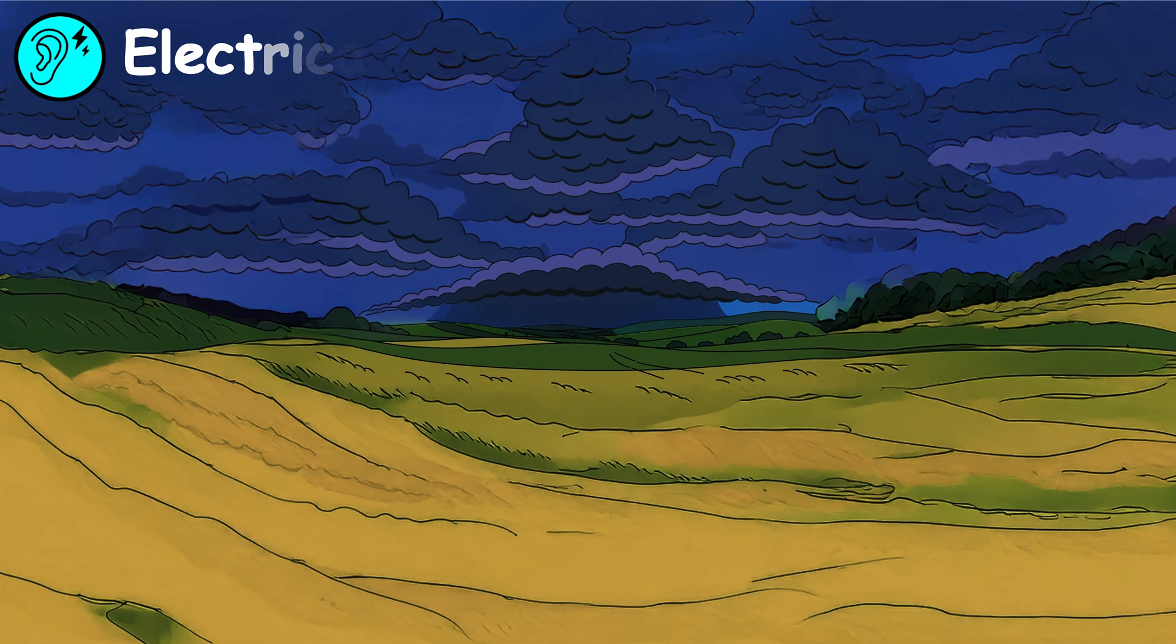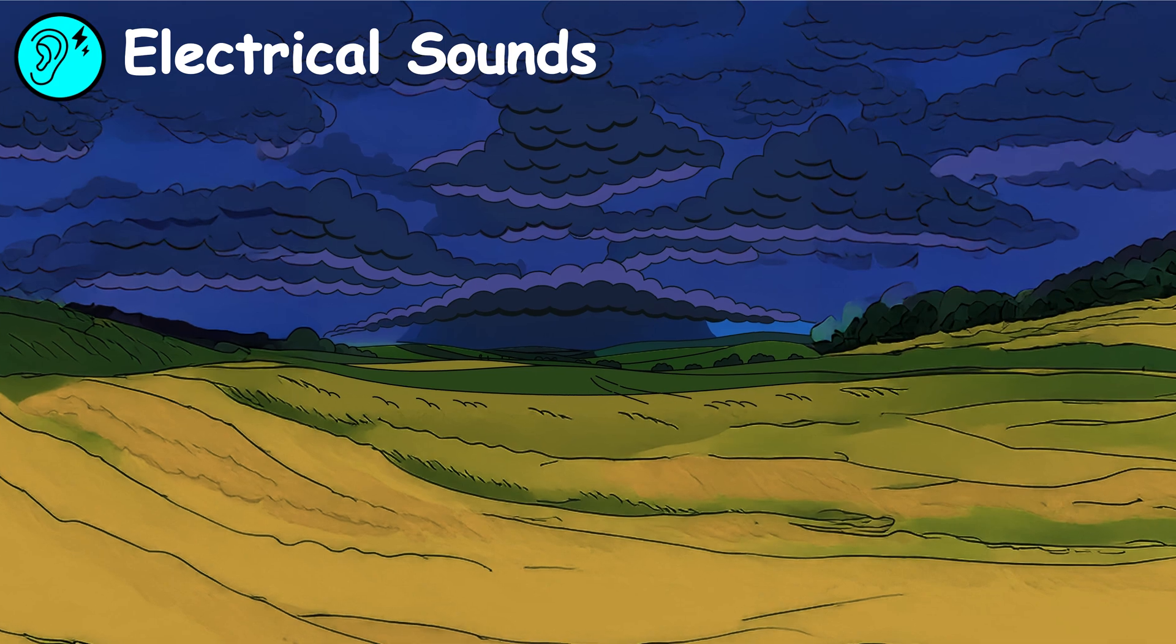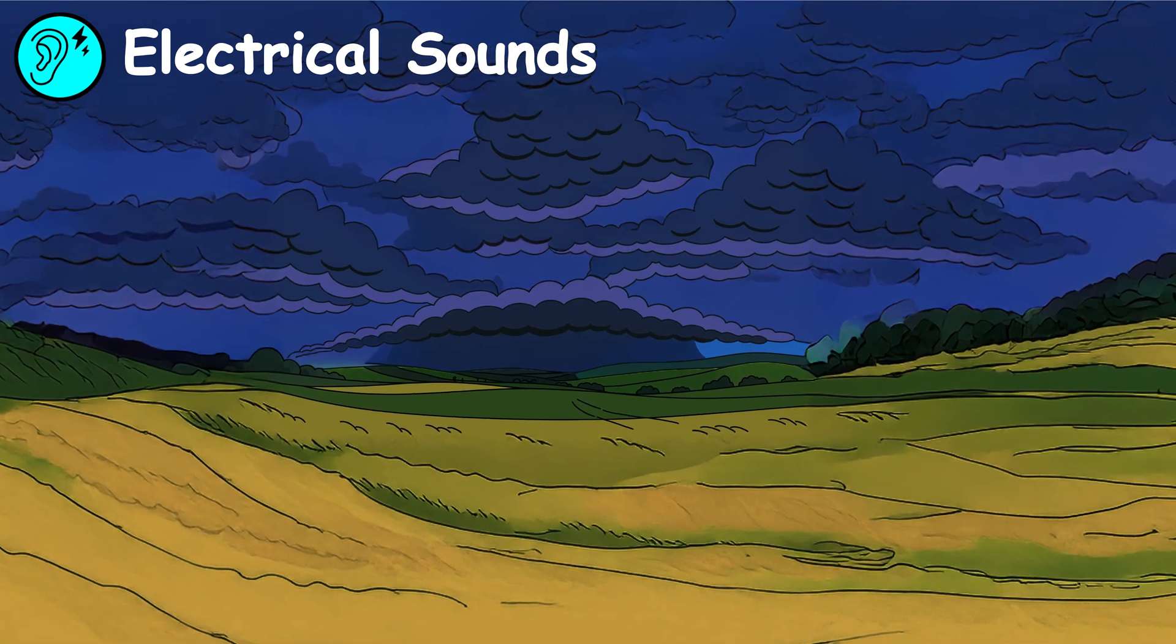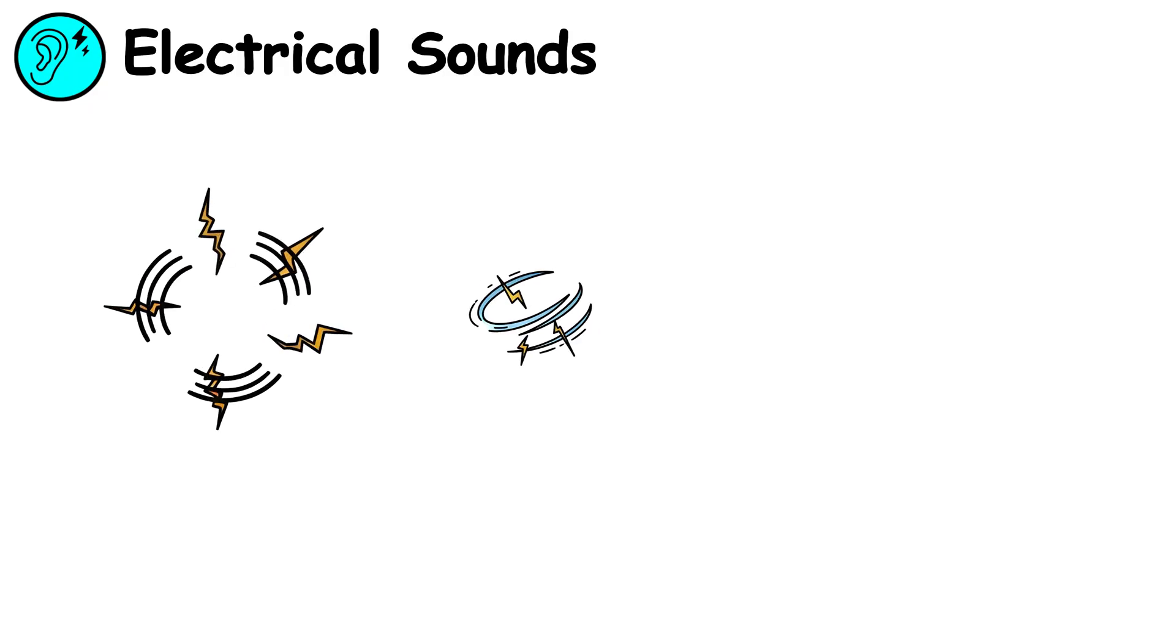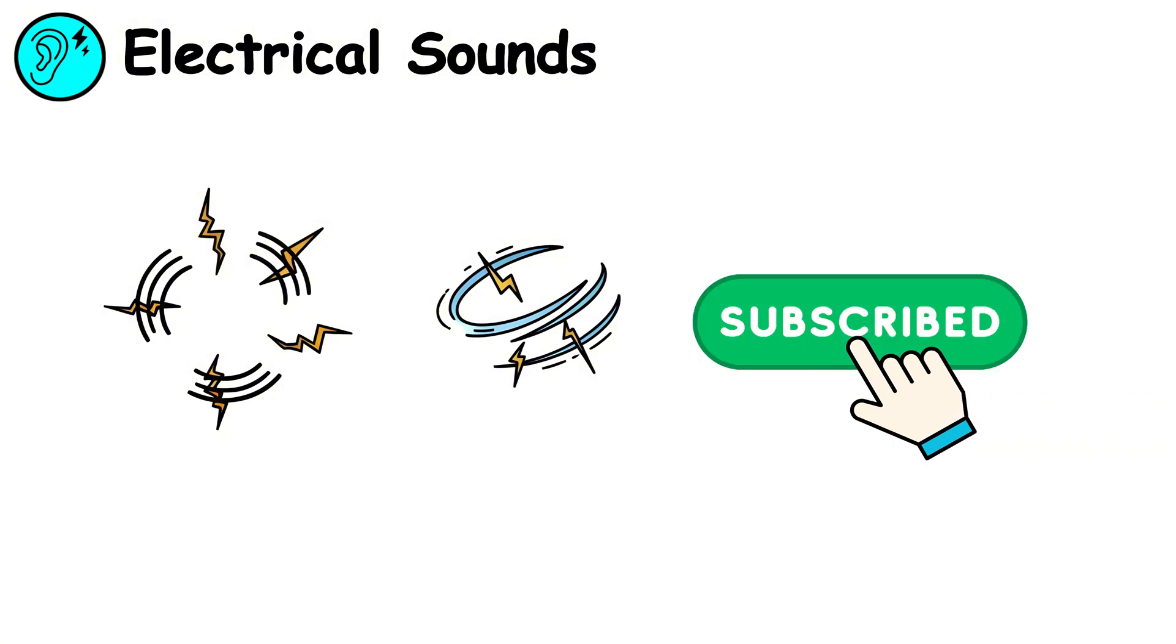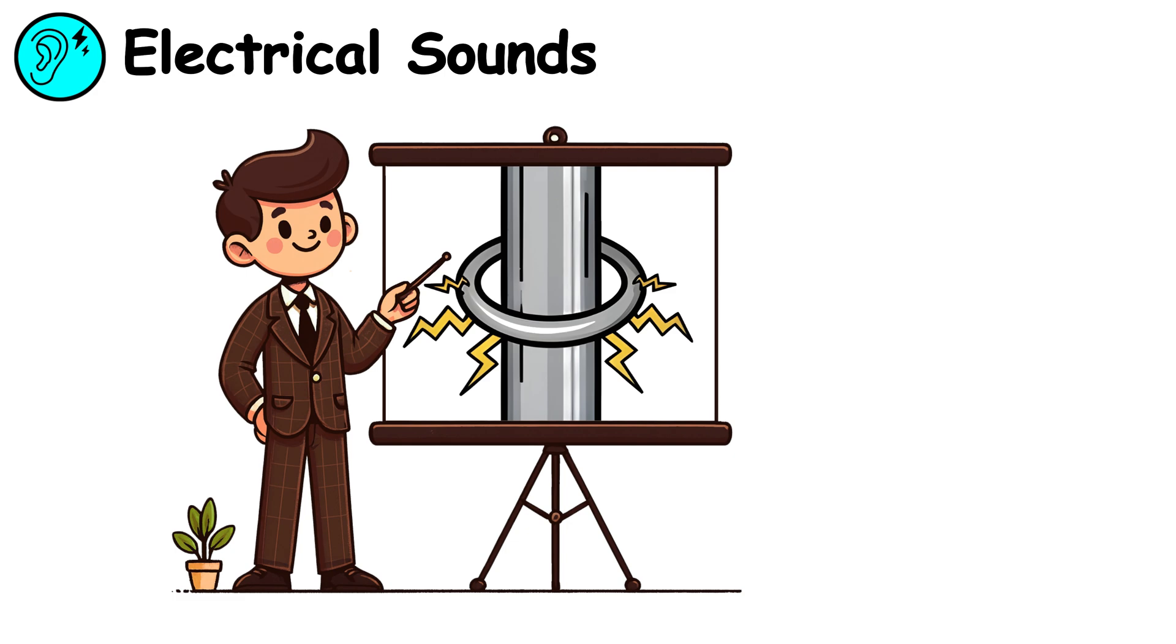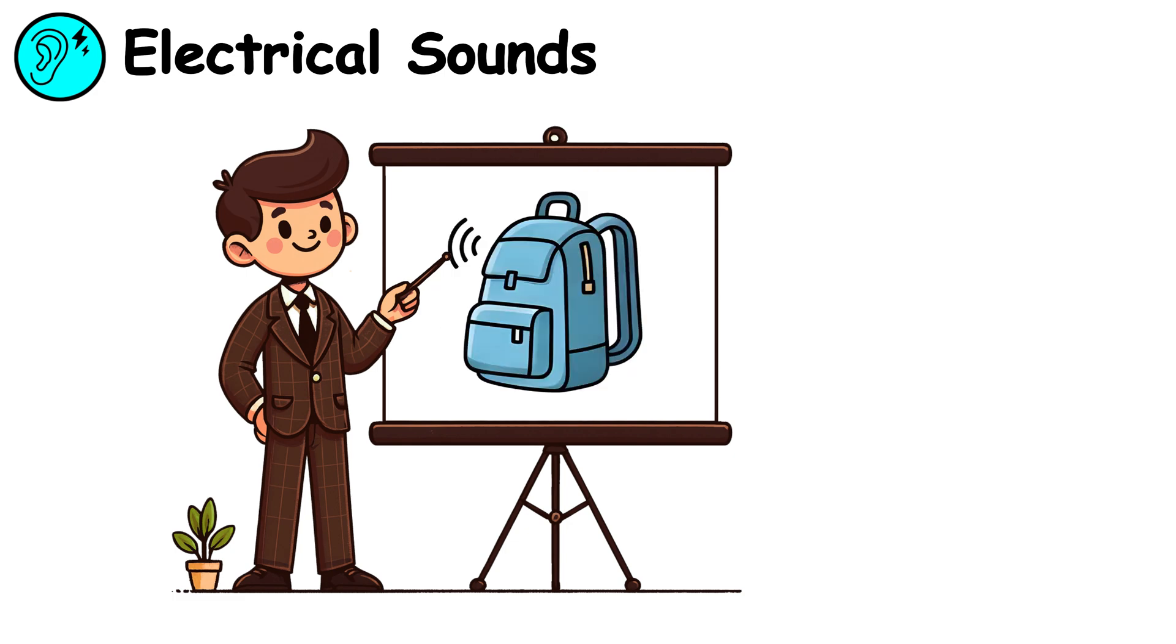Electrical sounds. Right before a lightning strike, you may hear strange electrical noises around you. It can sound like a faint buzzing, crackling, or even clicking noise. These sounds often come from metal objects such as fences, poles, backpacks with metal frames, or even jewelry.